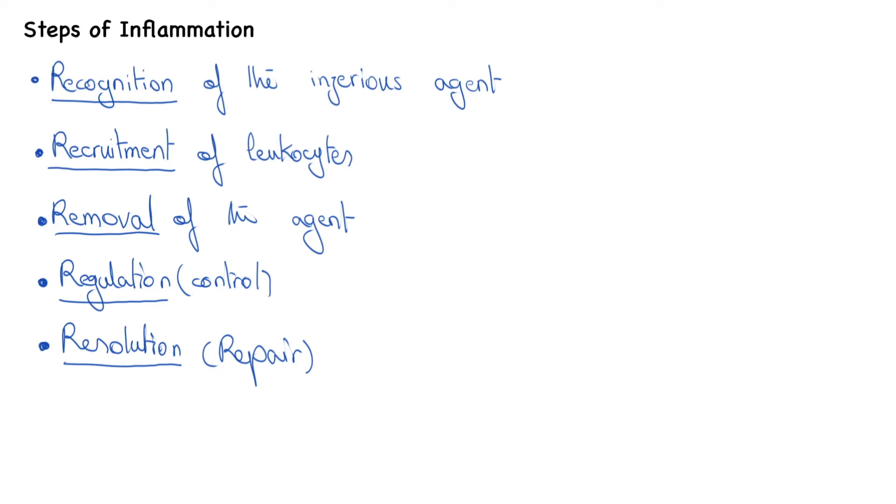Firstly, during the first step, the offender has to be recognized. This responsibility falls on macrophages, dendritic cells, and mast cells. If you want to learn more about these cells of the immune system, you can watch my video on that.